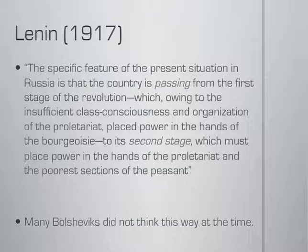Here's what Lenin says about the revolution. He says that the feature of the present situation in Russia is that the country is passing from the first stage of revolution, which, owing to its insufficient class consciousness and organization of the proletariat, placed power in the hands of the bourgeoisie, to its second stage, which must place power in the hands of the proletariat. So obviously that's his goal — to get this from a bourgeoisie movement to a proletariat movement.